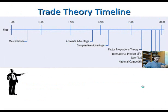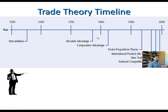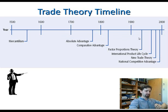Now let's talk about specific theories. The whole international economics field is about explaining who trades with whom and who should trade with whom. There have been many different theories explaining why countries trade. One interesting thing is that certain theories dominated the field for a long time — mercantilism, for example, was the prevailing theory for about three centuries — but the frequency with which new theories have emerged in recent years is increasing, which suggests that what we know today may be proven wrong tomorrow.